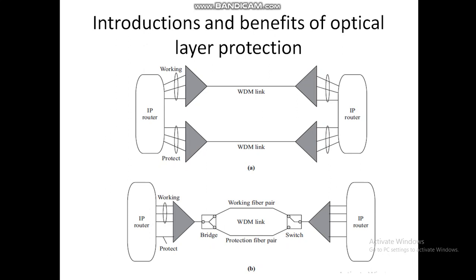The optical layer can also handle some faults more efficiently than the client layers. The diagram shows the benefits of optical layer protection compared to protecting the IP layer. In the first diagram, all the protection mechanisms are handled by routers, and two diversely routed WDM links are used. Each IP router uses three working ports and three protect ports to protect against both fiber cuts and equipment failure.